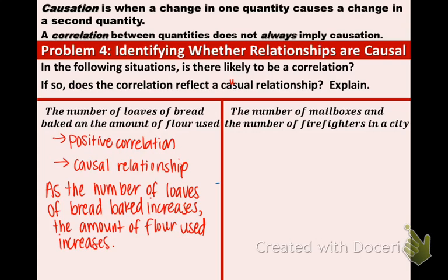Now let's take a look at the other side. The number of mailboxes and the number of firefighters in a city. Well, think about it. If there are more mailboxes, that means there's more houses. And then it also means that if there's more houses, there's more firefighters in the city. So this is likely a positive correlation, because the number of mailboxes and the number of firefighters tends to increase as the population of the city increases.